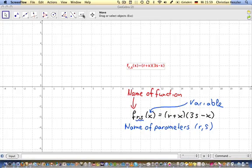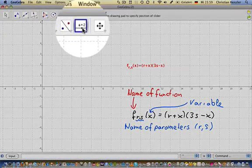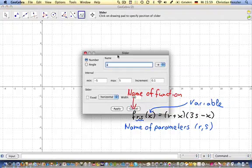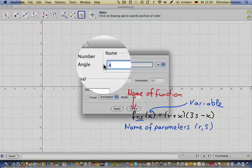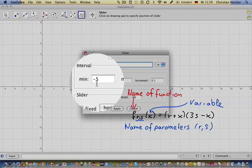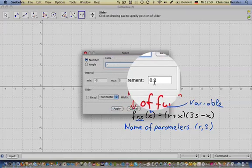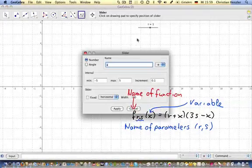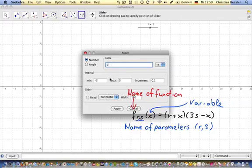We click on slider, choose any position, and give it the name r. Let's say the interval negative 5 to 5 is nice and the increment of 0.1. Apply. And let's create the other one which is s with the same interval and the same increment.